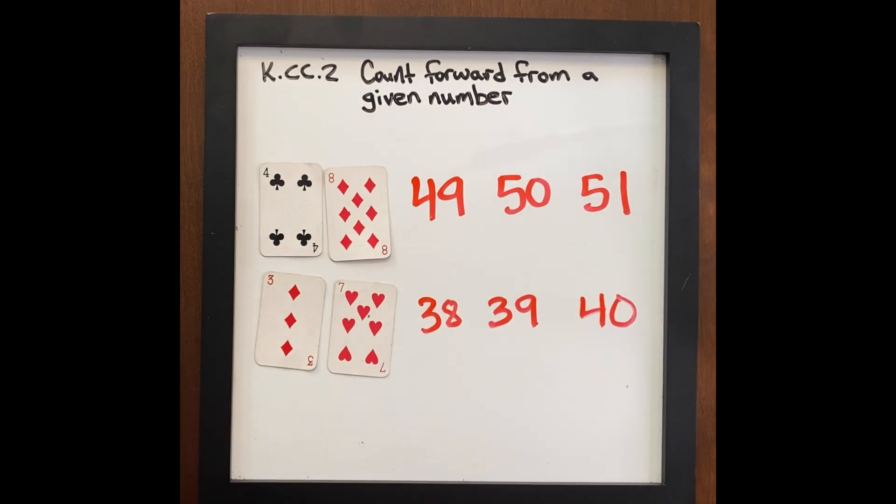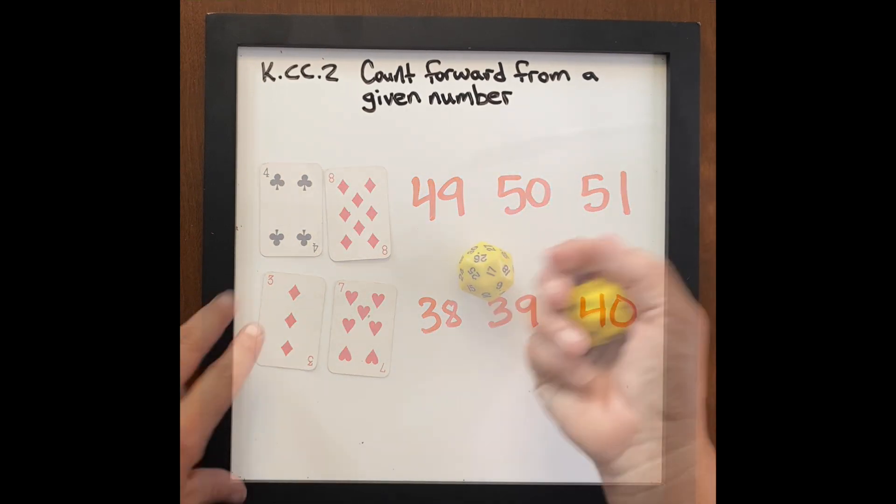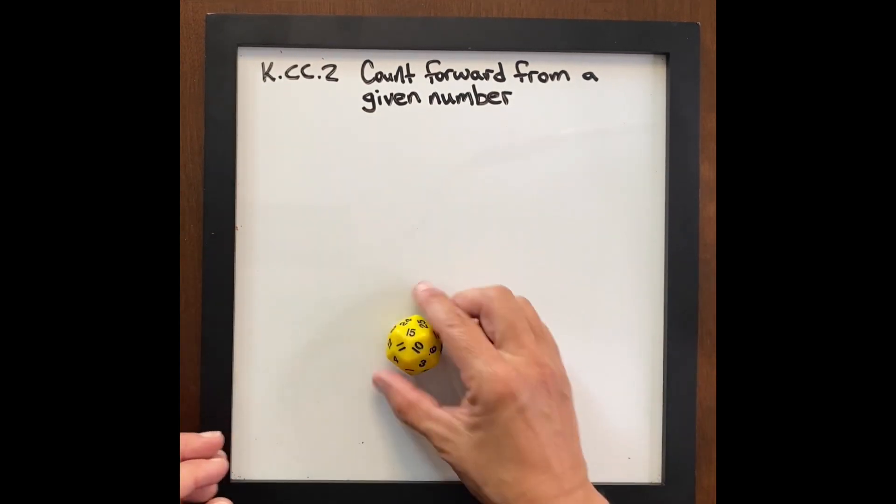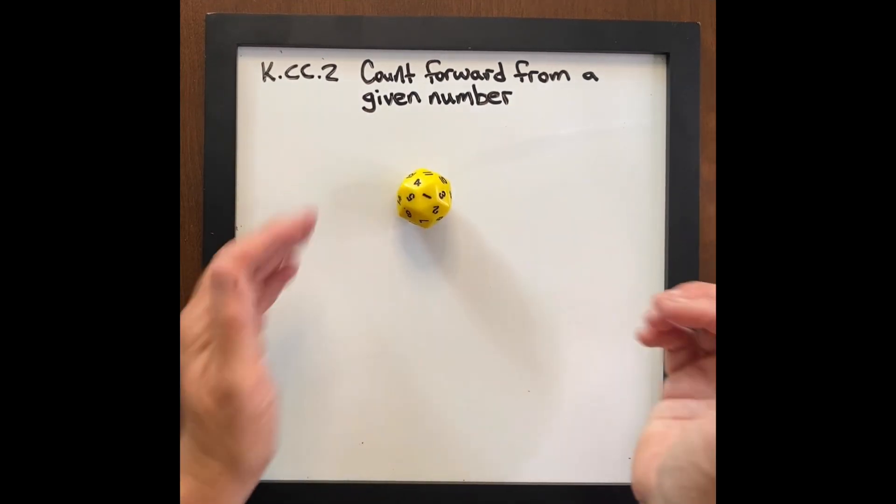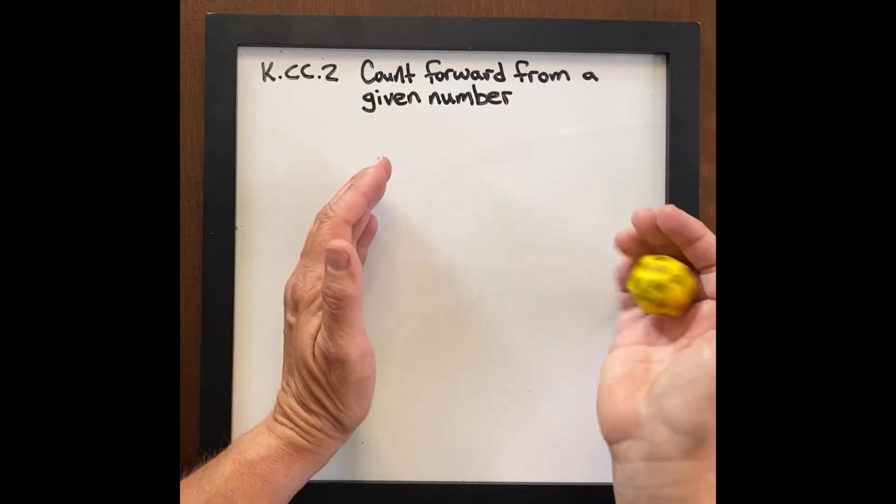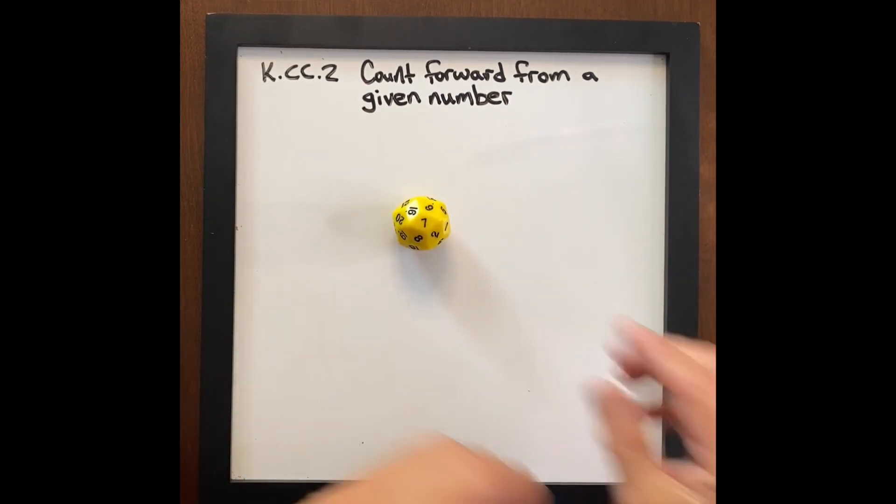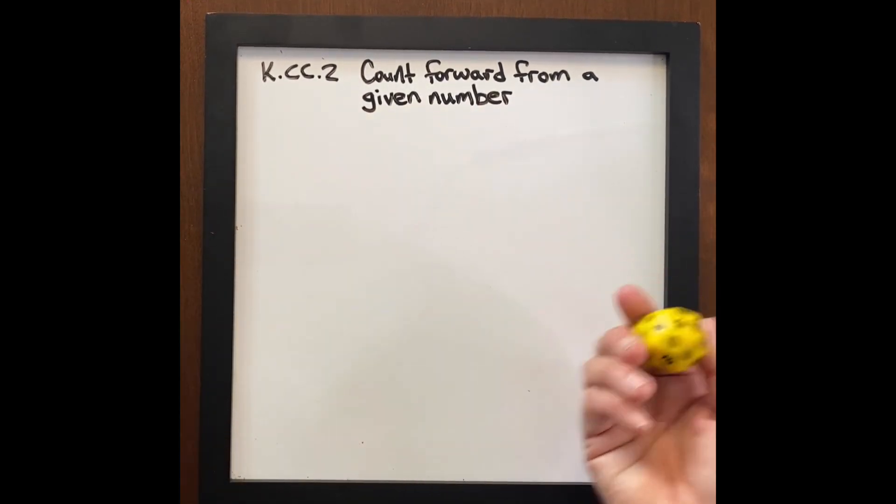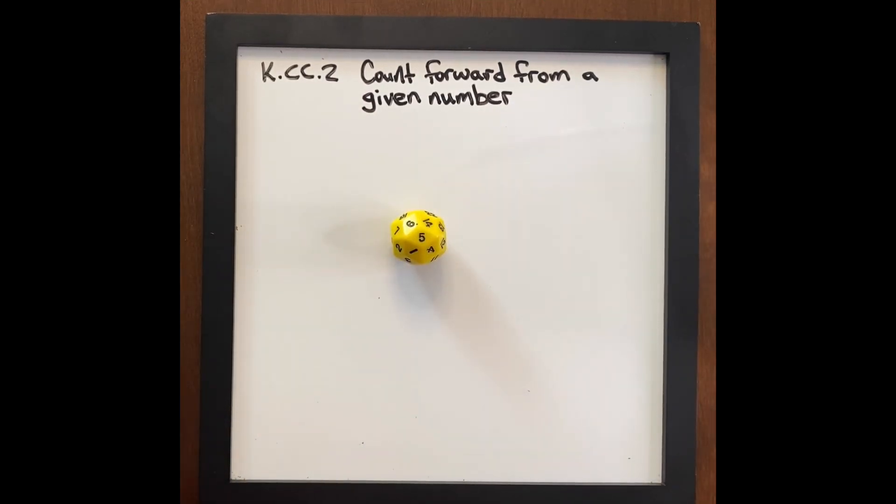So this is a great activity you can do to differentiate within the classroom. I also have a fun thirty-sided die. Some days, all you need to do is put this under a document camera, roll it and have the students say ten, eleven, twelve, thirteen, one, two, three, four, or have the teacher say seven and have the kids say eight, nine, ten, or have the students say eight, nine, ten, eleven. Bottom line, it's a great warm up to practice counting forward from a given number. Enjoy.